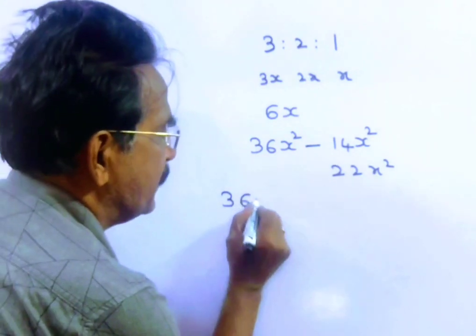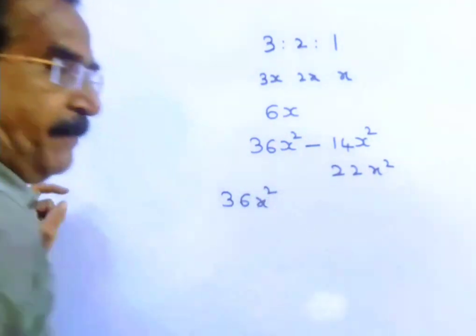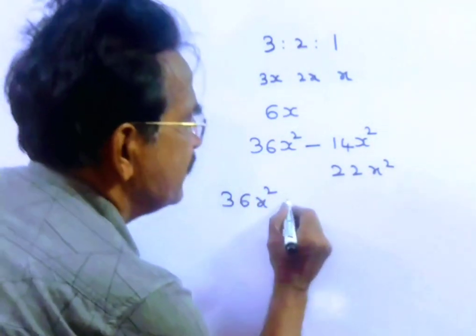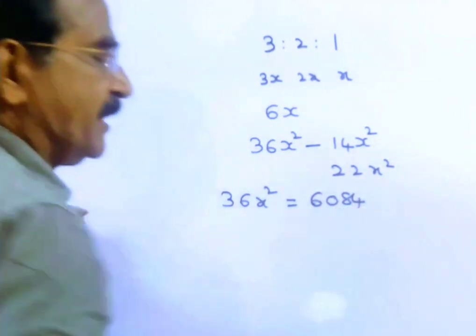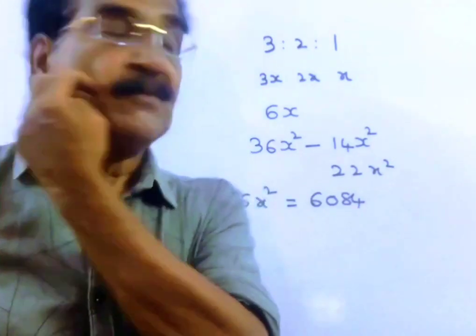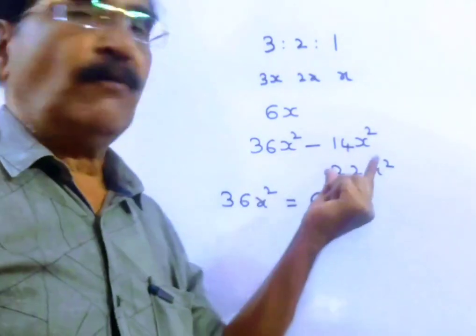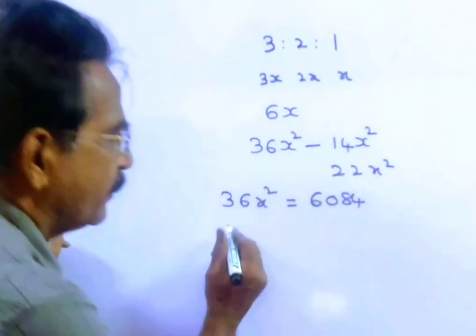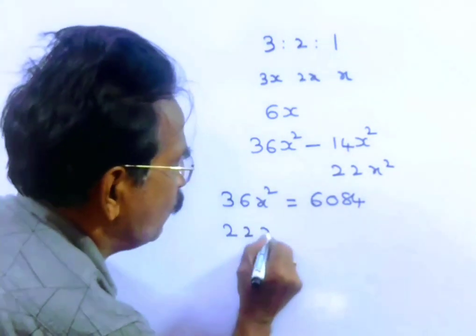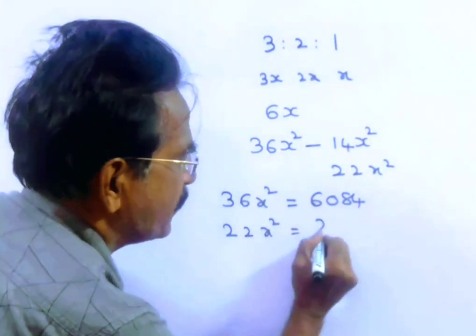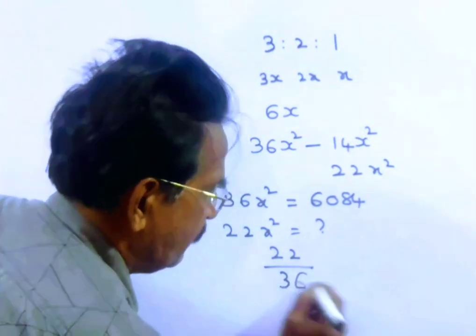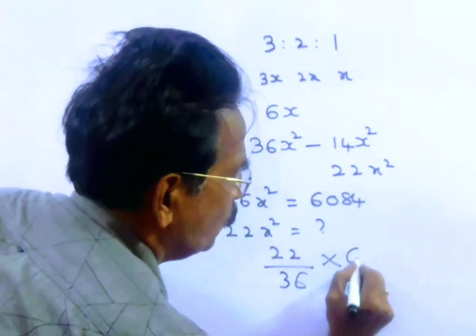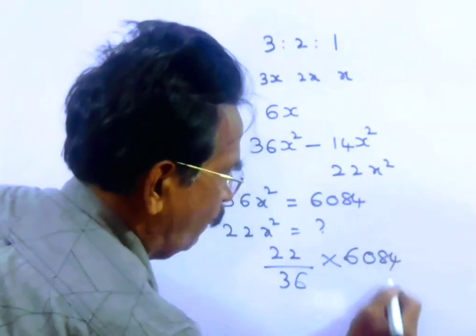that is the price of the diamond before it was cut, is 6084. Friends, 36x whole square. We want the value of 22x whole square. 22x whole square is how much? 22 upon 36 into 6084.